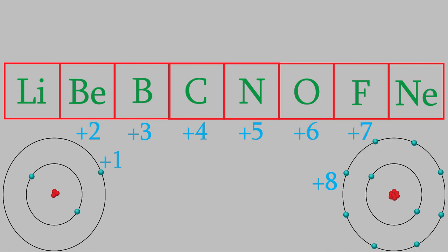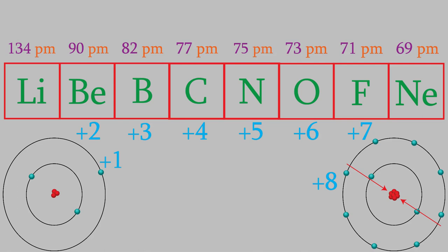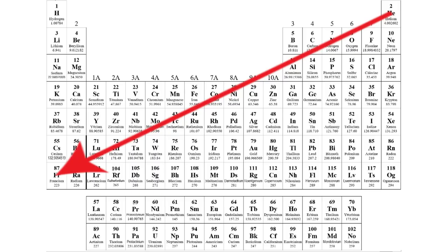So how does that affect the radius? Well, the more the nucleus pulls on the valence electrons, the closer those electrons move to the nucleus. So the atom is smaller the more the nucleus pulls on the electrons. So neon, which feels a strong pull from the nucleus, is smaller than lithium. As you can see, lithium has a radius of 134 picometers, and the radius decreases to 69 picometers as we go to the right. So the atomic radius is higher as we go to the left on the periodic table and as we go down.